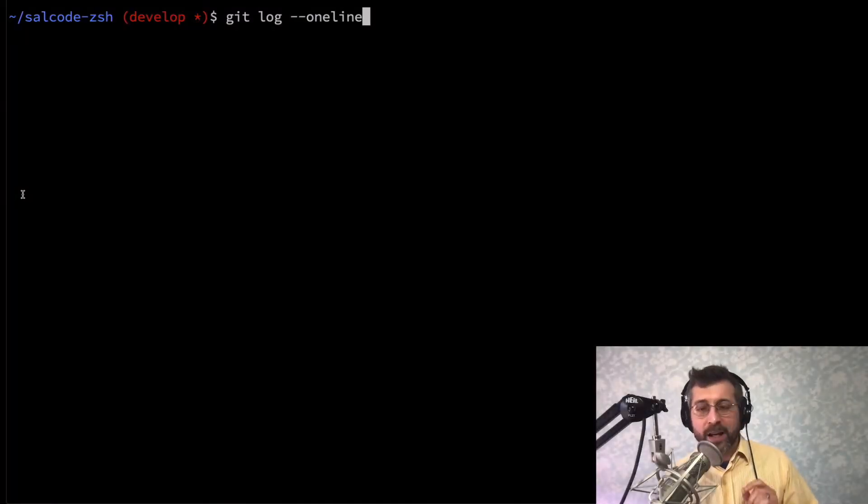Going along with this, the default Git log, I find not to be tremendously helpful. But you can really modify that output. And so what I use is git log --oneline.